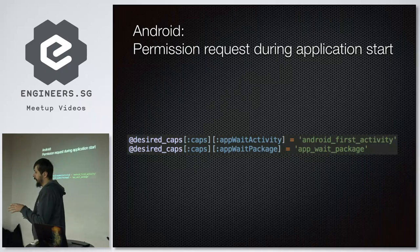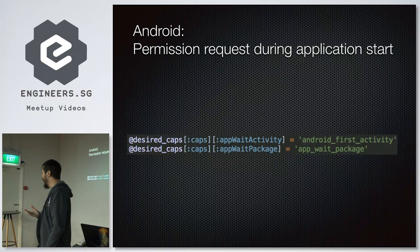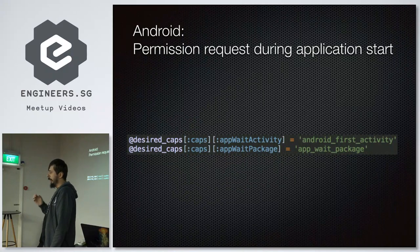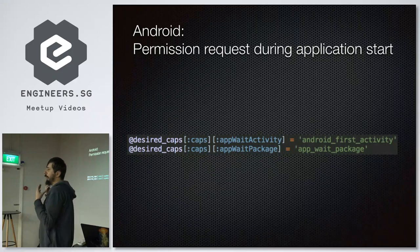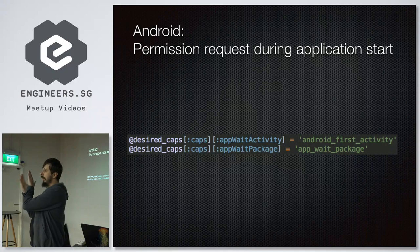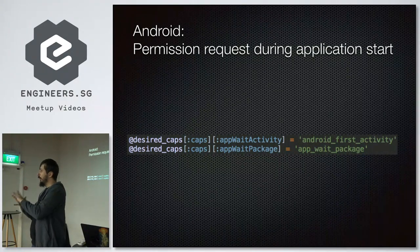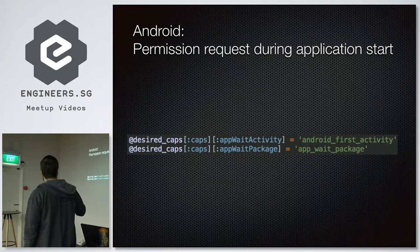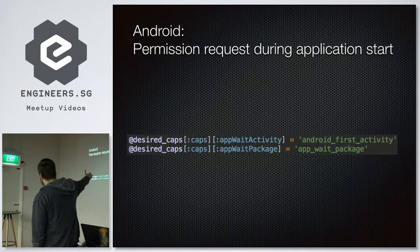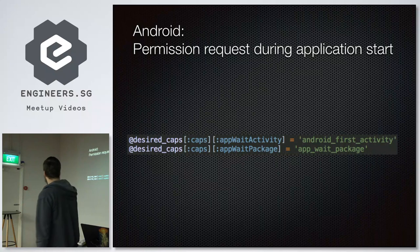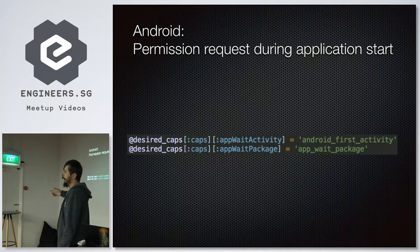To solve the permission-blocking-startup problem, Appium implemented the ability to set a non-default application activity and package. If you know the app first shows a permission request before the first activity, you can ask Appium to wait for that permission activity first, and only then wait for the real first activity of the application.